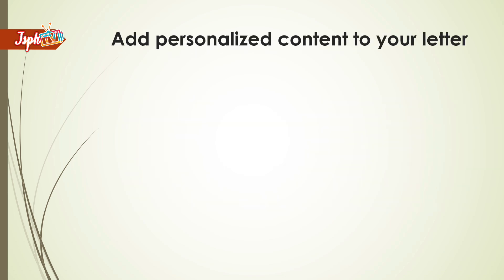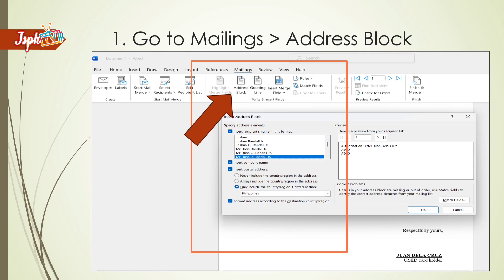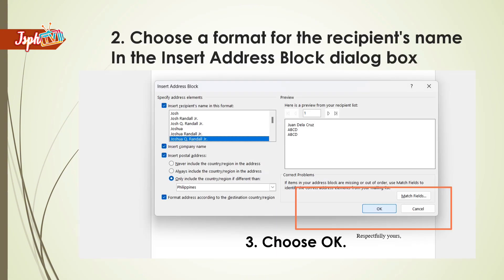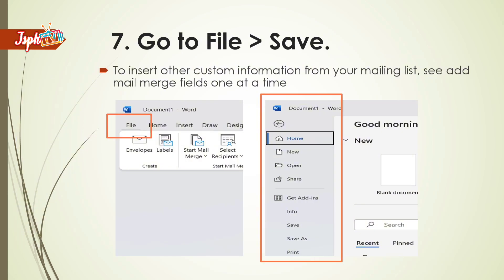Add personalized content to your letter — add content that's different for each person who receives it. Go to Mailings, then Address Block. Choose a format for the recipient's name in the Insert Address Block dialog, and then click OK. Next, choose Greeting Line. Select the format you want to use in the Insert Greeting Line dialog box, then select OK to insert the greeting line field. Next, go to File to Save. To insert other custom information from your mailing list, see Add Mail Merge Fields one at a time.